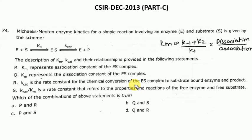The D option — Q and S — is correct. The S option states that Kcat/Km is the catalytic efficiency, which refers to the properties and the reaction of the free enzyme and free substrate. So it is clear that KM is the dissociation constant of ES, and Kcat/Km represents catalytic efficiency. If you have any doubts, please write in the comment box. Let's see the next question.